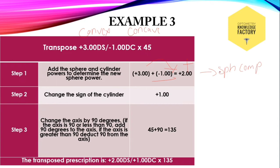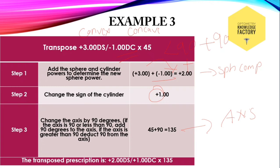Step 2: change the sign of the cylinder. Here the cylinder is concave. We have to convert it into convex by changing the sign to plus. The last step: change the axis. Here the axis is 45, which is lesser than 90. So add 90 degrees to find out the axis of the transposed form: 45 plus 90 is 135. This is the axis of the transposed form. So the transposed form of plus 3 diopter sphere with minus 1 diopter cylinder at 45 is plus 2 diopter sphere with plus 1 diopter cylinder at 135.